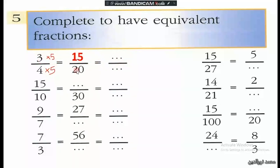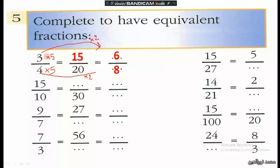We can also work on 15 over 20 or on 3 over 4 to find simpler fractions. Working on 3 over 4, we could multiply by 2: 3 times 2 is 6, and 4 times 2 is 8. So the fractions 3 over 4, 15 over 20, and 6 over 8 are all equivalent fractions.